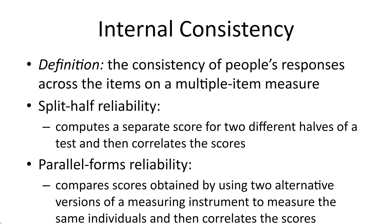Another way to assess internal consistency is parallel forms reliability. Instead of creating one test and comparing it to itself, you create multiple equivalent versions. You compare scores by obtaining data from two or more alternate versions of the measurement procedure from the same individual. The drawback is that a person has to take multiple complete tests — a full set of a hundred questions followed by another full set of different questions. But if both tests accurately measure math ability, they should perform equally well on both.